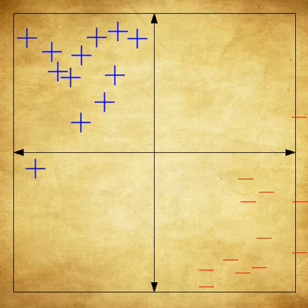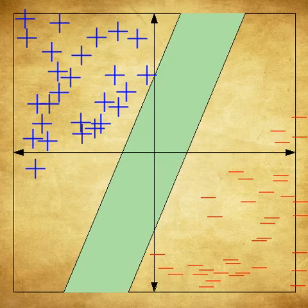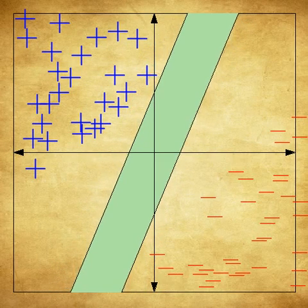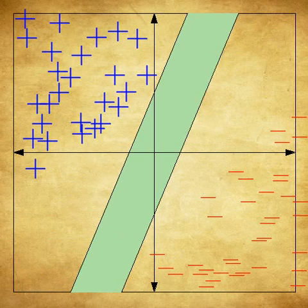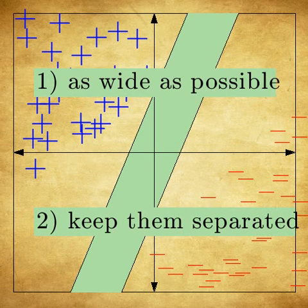Let's say we have a two-dimensional plane and two classes of objects and we want to put a border between them. We can change the width of the border or we can play with the orientation. Our goal is to find the border as wide as possible and keep the objects separated.